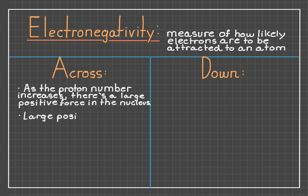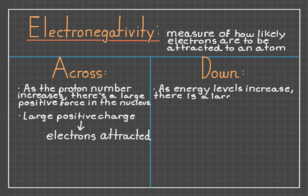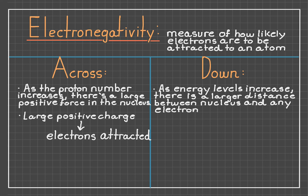As we go across the periodic table, we know that the atomic number of atoms increases, which means that the number of protons in the atom increases as well, because atomic number and the number of protons are representative of each other. As we have a greater number of protons, there's going to be a larger positive force concentrated in the nucleus, so electrons are going to be much more attracted to atoms with more protons, meaning that as we go across the periodic table, electronegativity strengthens.